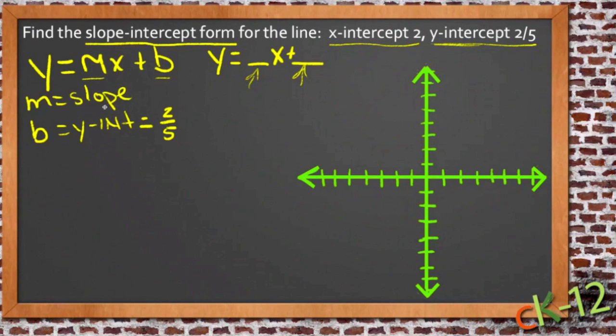Now there's a couple ways to do that. We can actually calculate the slope using the two points that we're given. We're given a point where the x-intercept is 2, so that means that there's a point right here on the x-axis. So we have a point at 2, 0. And then we have this other point right here, the y-intercept, which is 2 fifths.